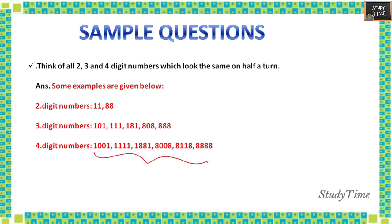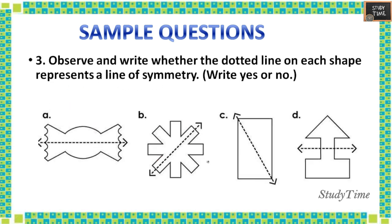Next, observe and write whether the dotted line on each shape represents a line of symmetry. If the two parts are identical, then we can say it is a line of symmetry. Here it is yes, here yes, here yes, here yes, and here it is no because the parts are not identical.